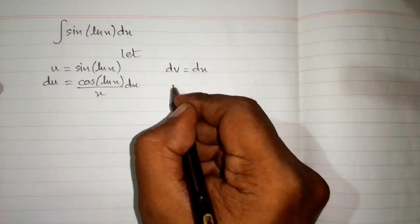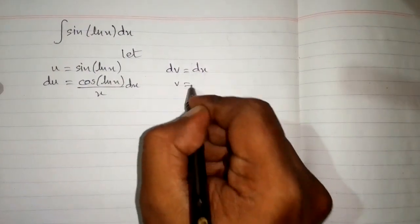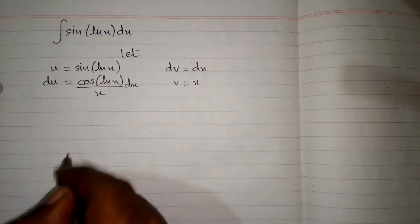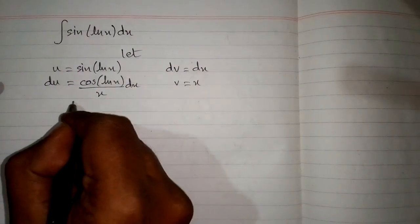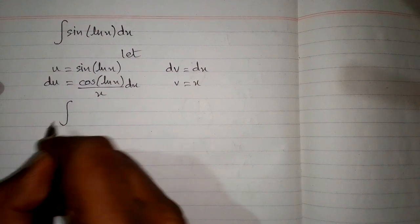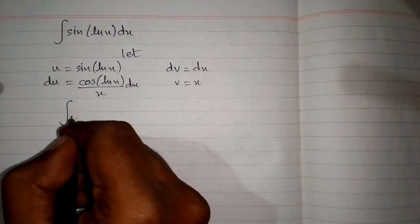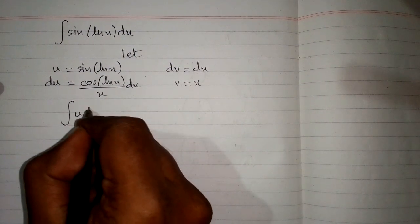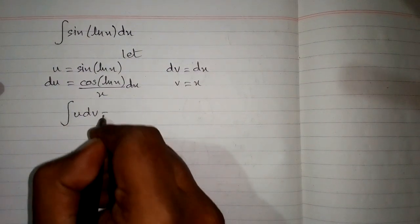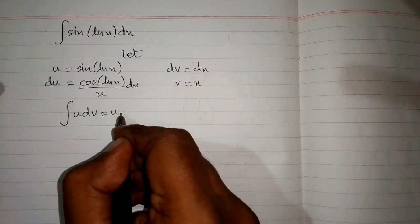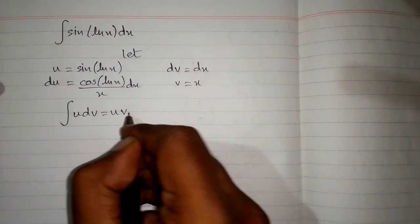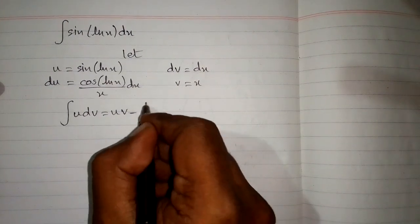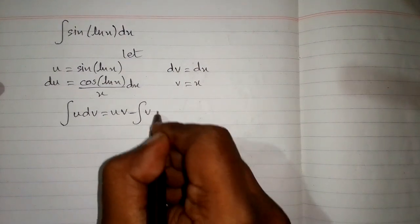We integrate both sides, so we have v equal to x. The formula for integration by parts is: integral of u dv equals u times v minus integral of v du.